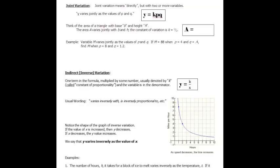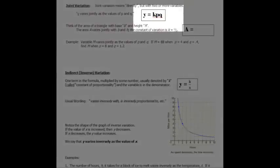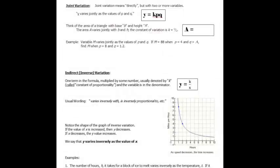Joint variation is another form of direct variation, but it's varying directly with two or more variables. If you think of that, y varies jointly as p and q, y = k times p times q. You can think of this as like the area of a triangle. The area of a triangle is one-half base times height, so the area of a triangle varies with both the base and the height.